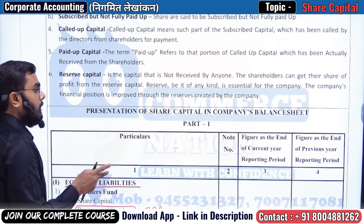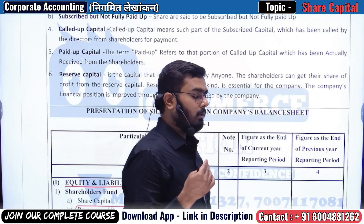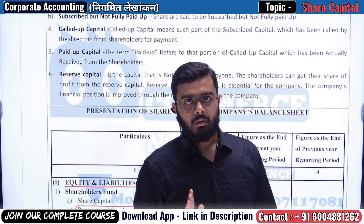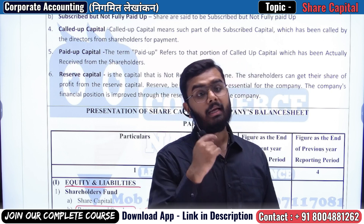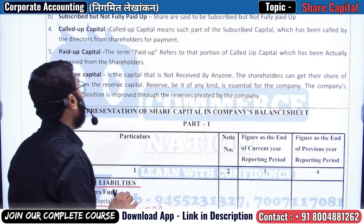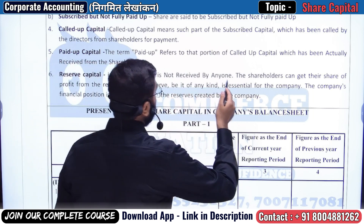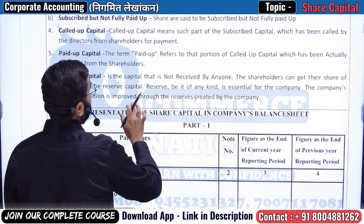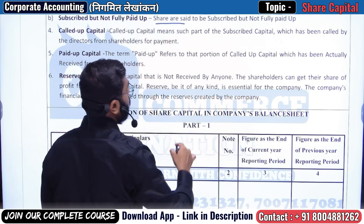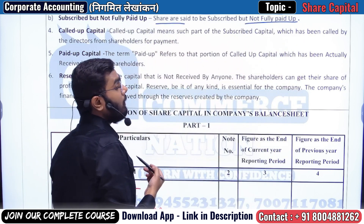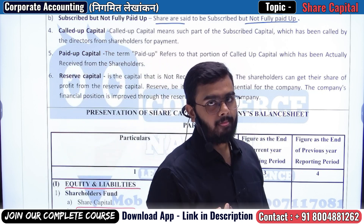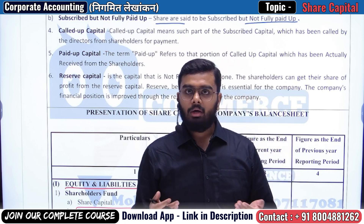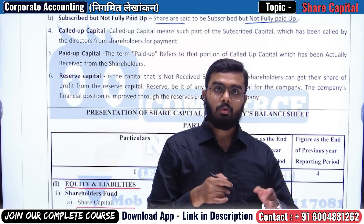Now subscribed but not fully paid up — since you've understood subscribed and fully paid up, this is easy to understand. It means people subscribed to shares and the company demanded payment, but the subscribers did not pay the full amount. Shares are said to be subscribed but not fully paid up. Either the company may have called only 65 rupees on a 100-rupee share (so it's not fully called up, hence not fully paid up), or the company demanded the full amount but people haven't paid yet. Either way, this is called not fully paid up.